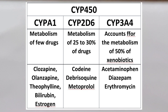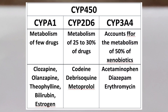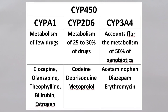Cytochrome P2D6 metabolizes 25–30% of the drugs and the drugs which are metabolized by cytochrome P2D6 are codeine, debrisoquin and S-metoprolol. Cytochrome P1 metabolizes antipsychotic drugs such as clozapine, olanzapine, haloperidol and other drugs such as theophylline, estrogen and so on.